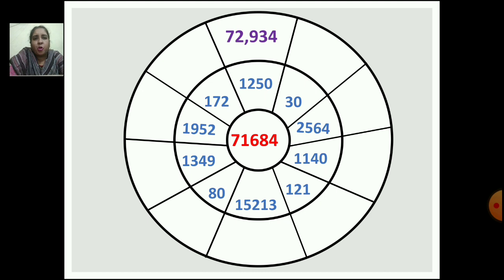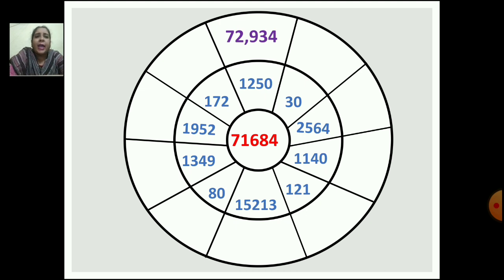This wheel you have to draw on the fullscape or plain paper and write the numbers. There are 3 wheels. In the innermost wheel the number is 71684, and in the second wheel you can see the numbers are written. You have to add the numbers in the inner wheel with the second wheel and write the total in the third wheel. For example, 71684 plus 1250 equals 72934 — same way you have to add the other numbers and write in the empty space.